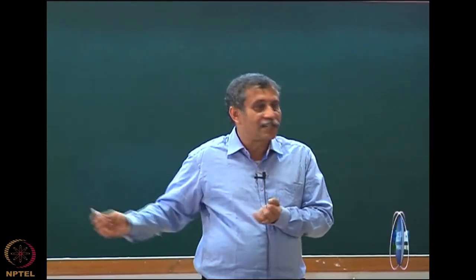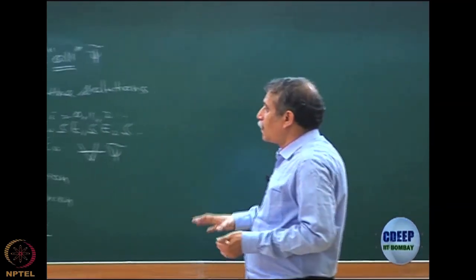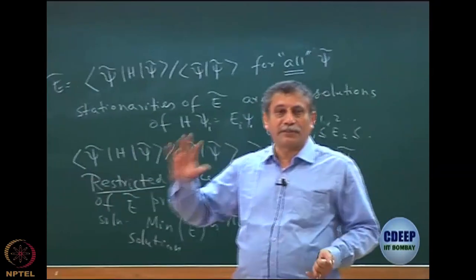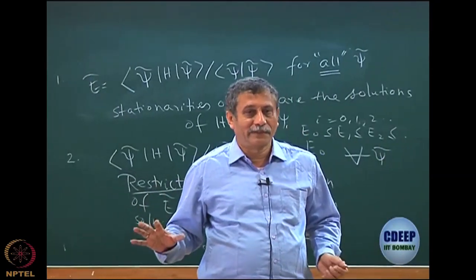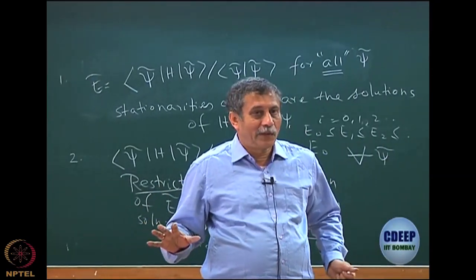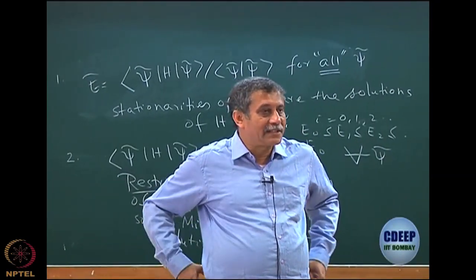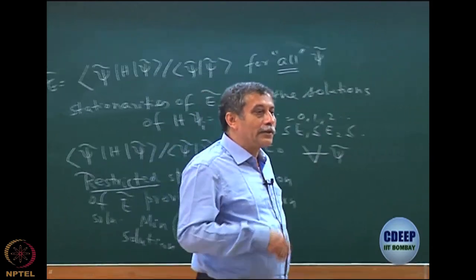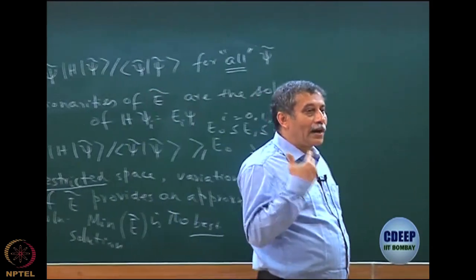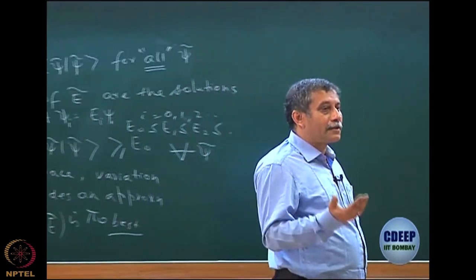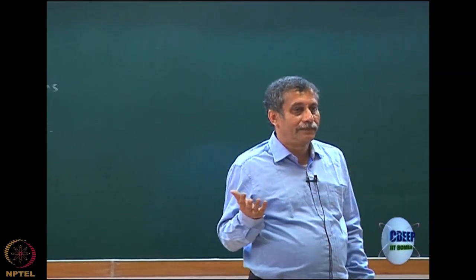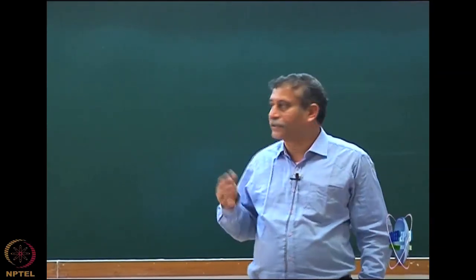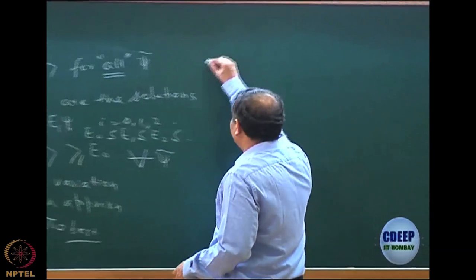So there is nothing called 'the variational solution' - that is a misnomer. Whenever you say a solution is obtained by the variation method, you have to also define what subspace of variation you used. Otherwise it has no meaning.